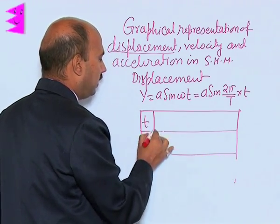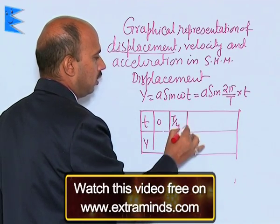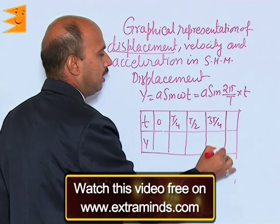So, for t equal to 0, t by 4, t by 2, 3 t by 4 and t.